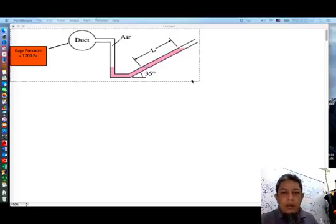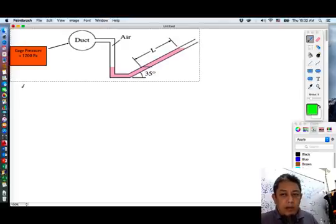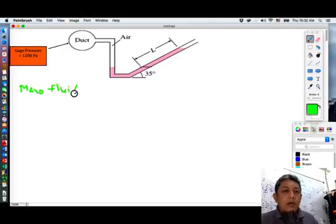The manometric fluid has a density of 950 kilogram per meter cube.